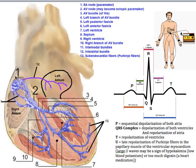The SA node is made up of pacemaker cells, and these cells possess an intrinsic rhythm. This means they initiate action potentials themselves at regular intervals without any stimulation by nerve impulses from the brain or spinal cord, or any hormonal stimulation.